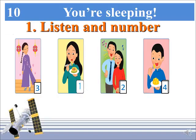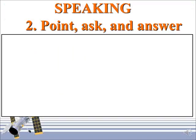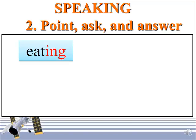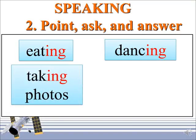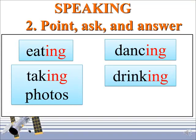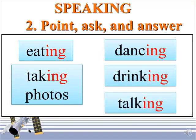Let's move on. In this task we will practice speaking. Task 2: Point, Ask and Answer. First of all, look, listen and repeat after me: Eating, Dancing, Taking photos, Drinking, Talking. Pay attention to the -ING — the red letters — the ING form of verb.